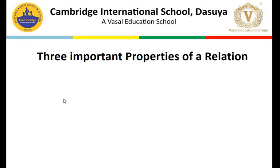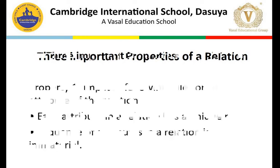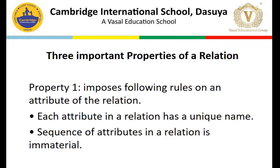A relation has three important properties. The first property imposes the following rules on the attributes of a relation. First, each attribute in a relation has a unique name - no two attributes should have the same name. For example, in the guardian relation we have guardian ID, guardian name, guardian address, and guardian mobile number - all unique names. Second, the sequence of attributes in the relation is immaterial - any attribute can come first, second, or third. So the order of attributes does not matter.